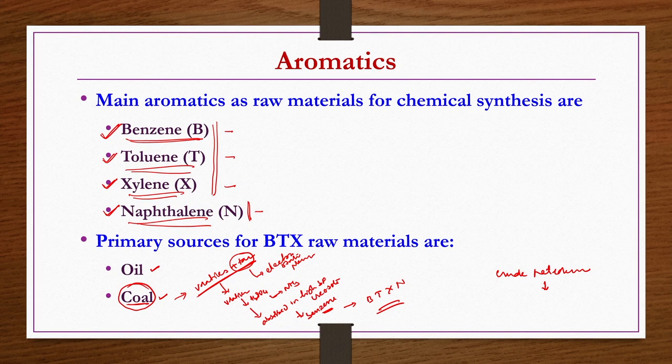Before going into details of production of different types of chemicals from aromatics, we discuss some basic concepts and introduction to these aromatics as raw materials for production of different chemicals. We also see how these are being produced using oil and coal as sources. We study only minimum introductory concepts because individually they are huge organic chemistry subjects. So we use them to produce different types of chemicals like phenol, phthalic anhydride, phthalic acid, etc.